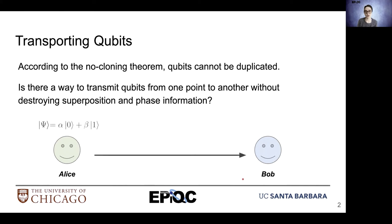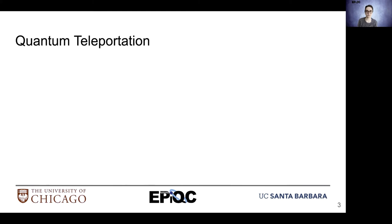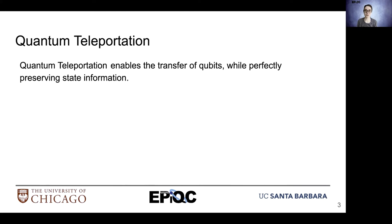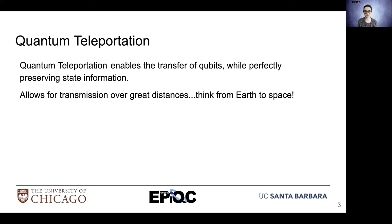Here we'll have two example parties trying to communicate: Alice and Bob. Alice will have a qubit that she wishes to transfer to Bob. Quantum teleportation enables the transfer of qubits while perfectly preserving qubit state, and it allows for transportation over great distances — think even from the surface of Earth to space.